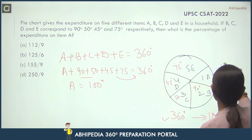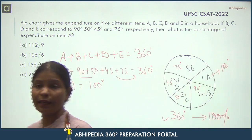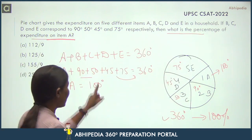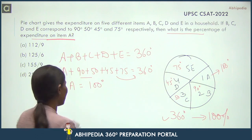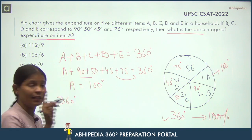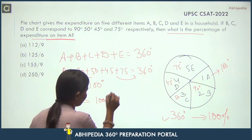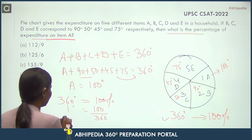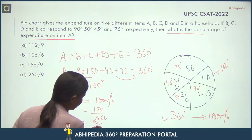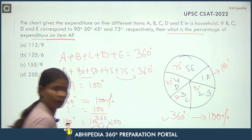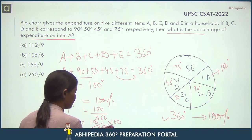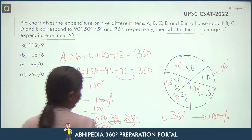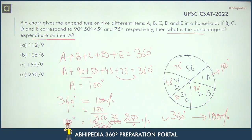A ki value 100 degrees hai. Jab meri paas data 100 degrees ka hai A ke andar, toh expenditure mujhe percentage mein find out karna hai. I want to know this value in the form of percentage. I know that 360 degrees is equal to 100 percent, so 1 degree is equal to 100/360. Therefore, 100 degrees will be equal to 100/360 × 100 = 250/9 percent. So the answer will be Option D.